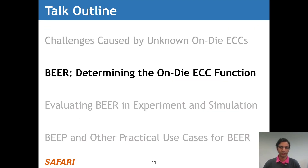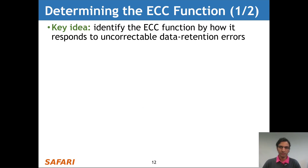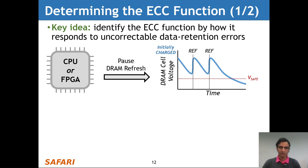This leads us into our primary contribution, called BEER. BEER determines the ECC function using the key idea that we can identify the ECC function based on how it responds to uncorrectable data retention errors. Data retention errors are relatively easy to induce — using a CPU or FPGA, we can simply pause DRAM refresh. The figure on the right shows how this affects a single DRAM cell: the x-axis shows time, and the y-axis shows the cell voltage.